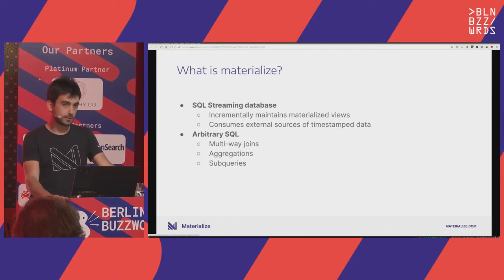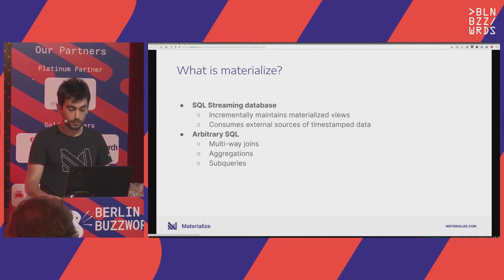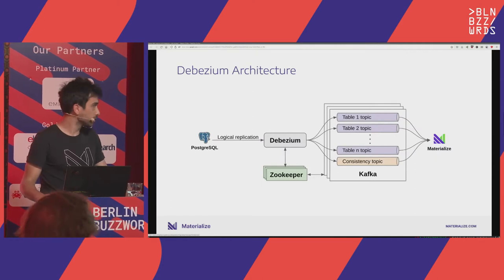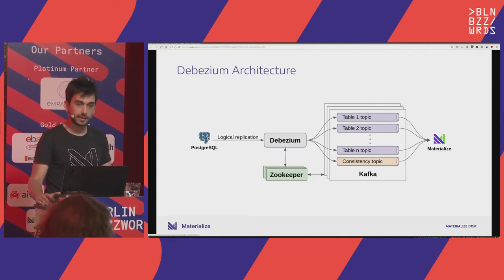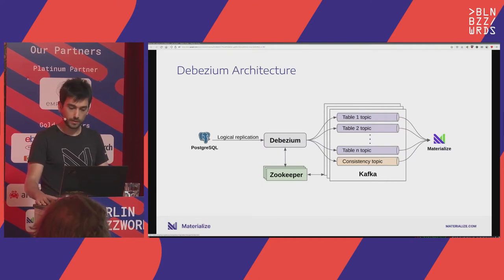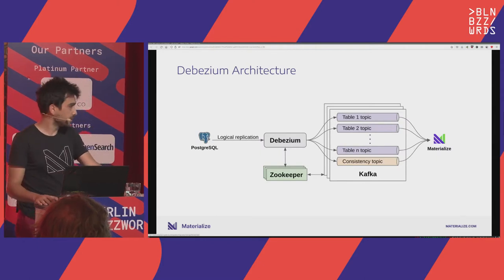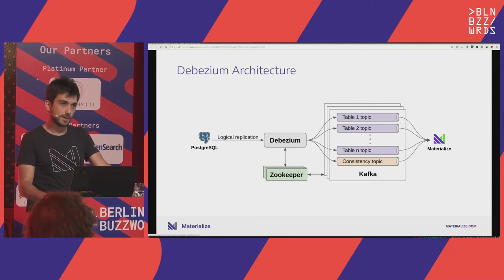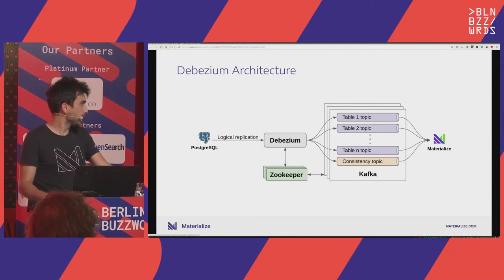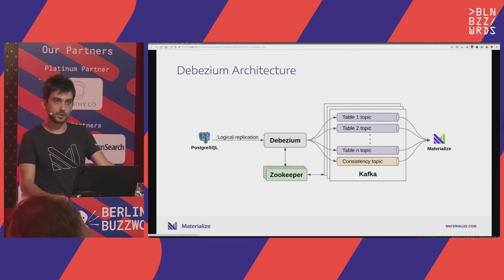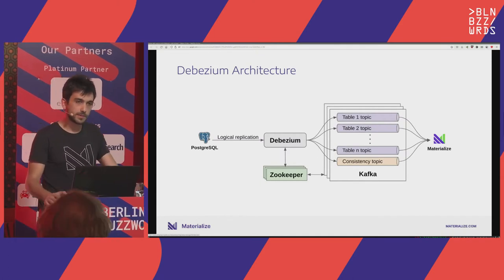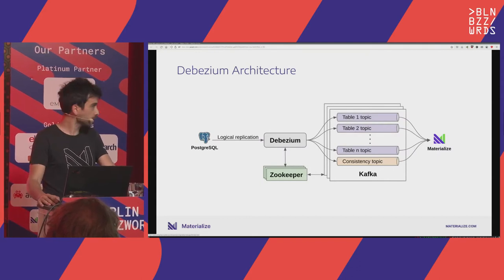When it comes to consuming external databases, the most popular option is to use Debezium. Materialize supports Debezium. Debezium is a Kafka Connect plugin that connects to an upstream database — in this case we'll talk about Postgres — through the logical replication protocol. Its job is to read that binary protocol, make sense of what's happening in the database, and publish the updates in one or more Kafka topics.